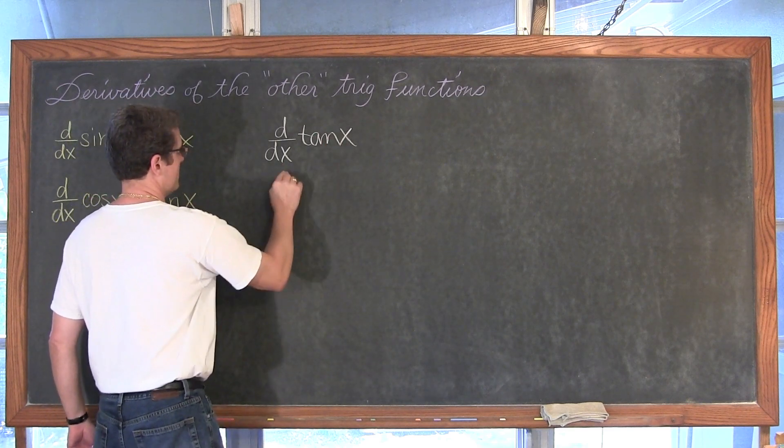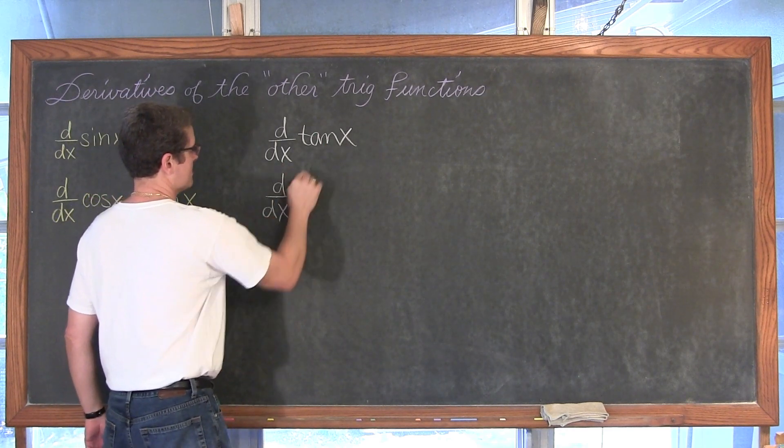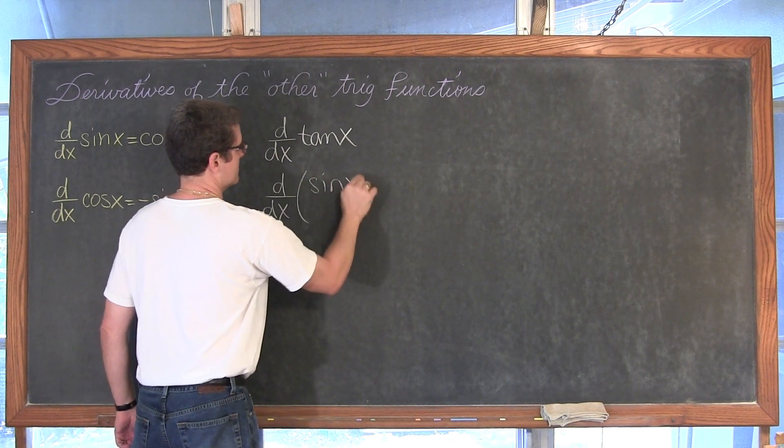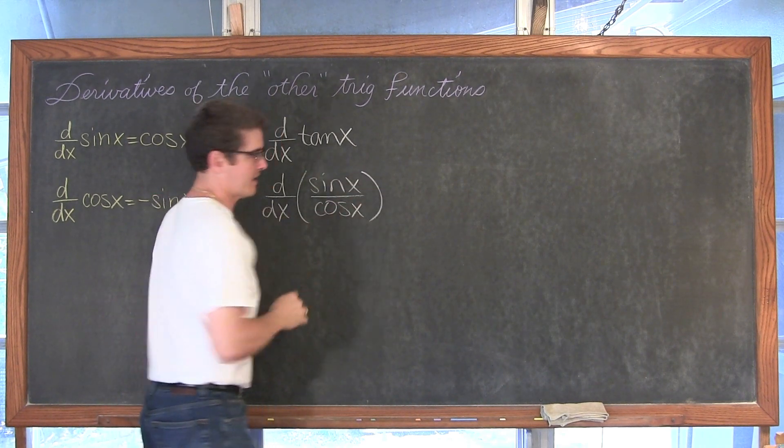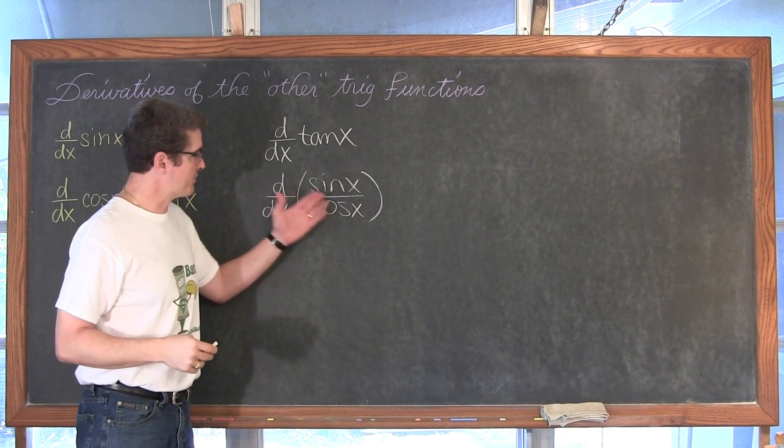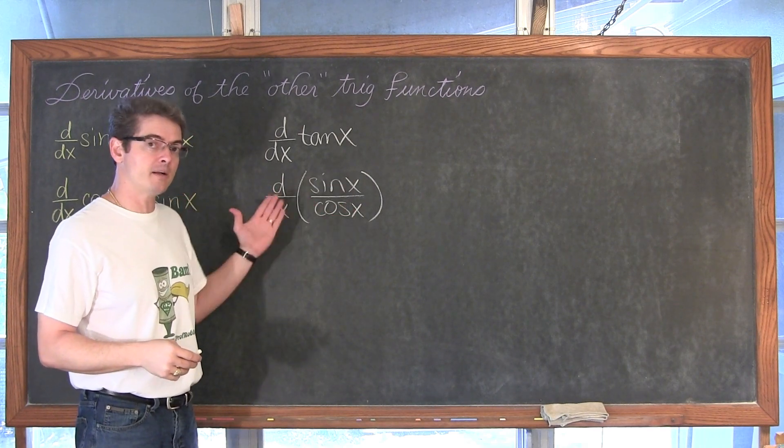So I can rewrite this as the derivative with respect to x of sine of x over cosine of x. Then walk through or go through the quotient rule of finding this derivative.